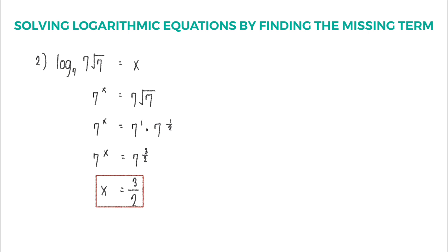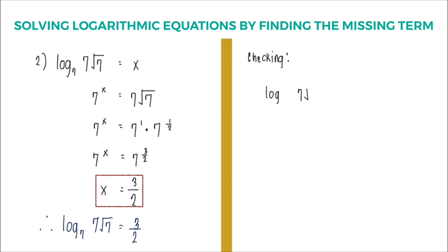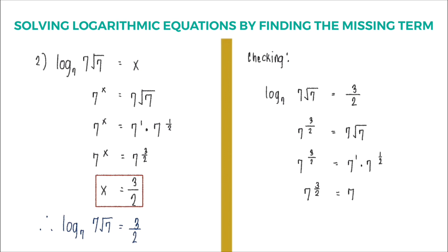Going back to our given logarithmic equation, logarithm of 7 times square root of 7 with base 7 is equal to x — the value of x is 3 over 2. To check, substitute x equals 3 over 2 into the equation, convert to exponential form, and apply the law of exponents. Since 7 raised to 3 over 2 equals 7 raised to 3 over 2, the answer is correct.